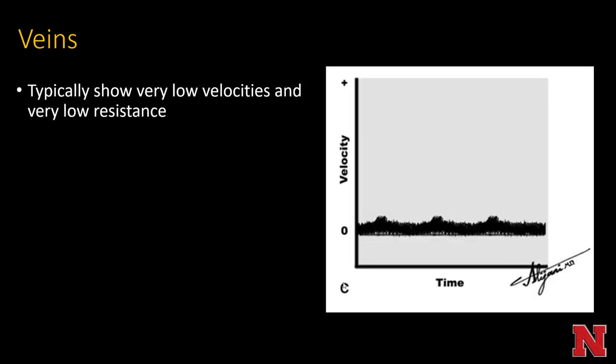Veins typically show very low velocities and very low resistance — just an undulating line without the high peaks of arterial vasculature. Veins can often have phasicity but not pulsatility. Pulsatile means going up and down in that mountain or high-hill morphology, whereas phasic means a gentler undulation up and down. For example, you'll get phasic flow in the portal vein even though you don't usually see pulsatility.